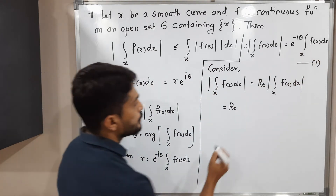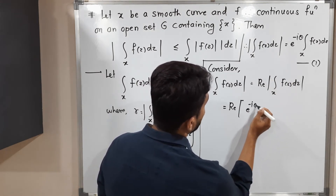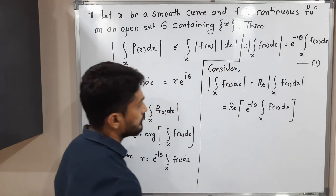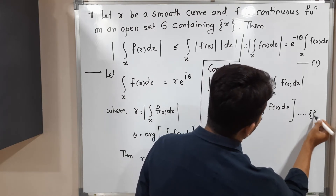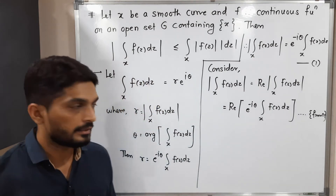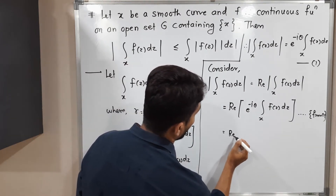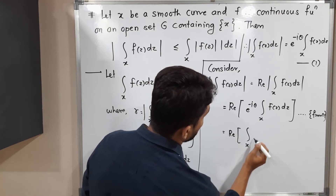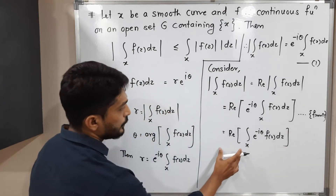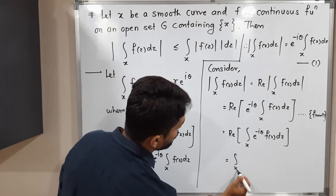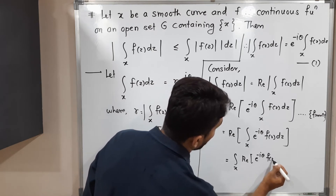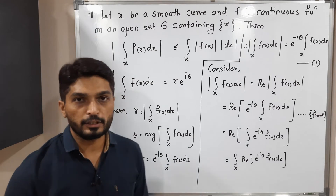From equation number one, the value of |∫_x f(z) dz| is e^(-iθ) · ∫_x f(z) dz. So this equals Re(e^(-iθ) · ∫_x f(z) dz). We can bring e^(-iθ) inside the integration, giving Re(∫_x e^(-iθ) f(z) dz). Then we can take the real part inside the integral: ∫_x Re(e^(-iθ) f(z)) dz.